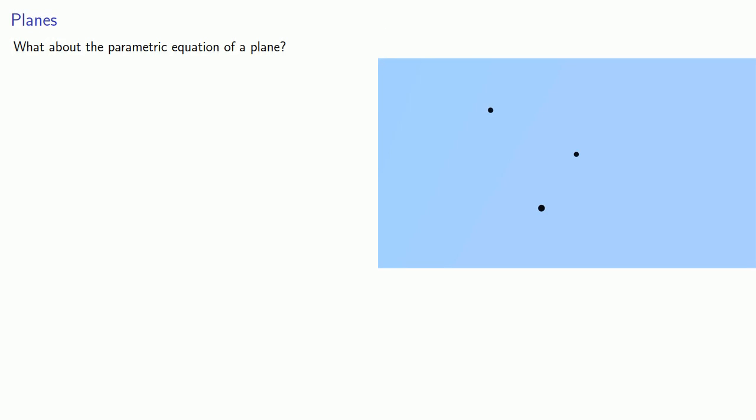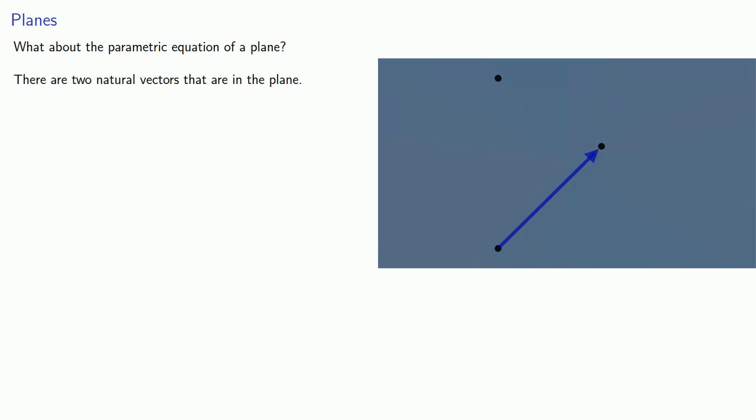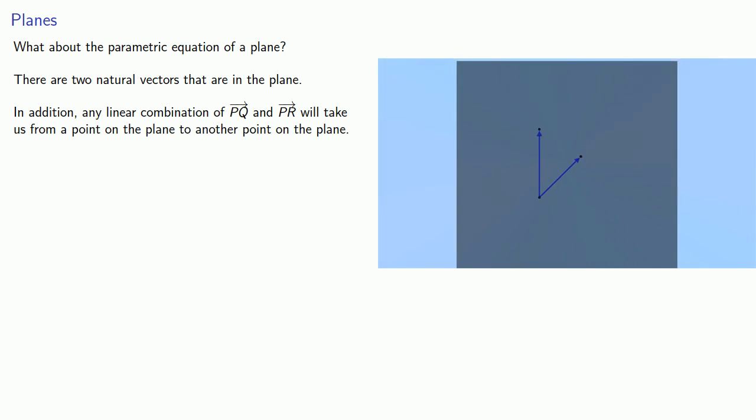So what about the parametric equation of a plane? Three points are enough to define a plane. And there's two natural vectors we can define, going from one point to each of the other two points. Now, it's worth also noting that any linear combination of these two points will take us to another point on the plane.